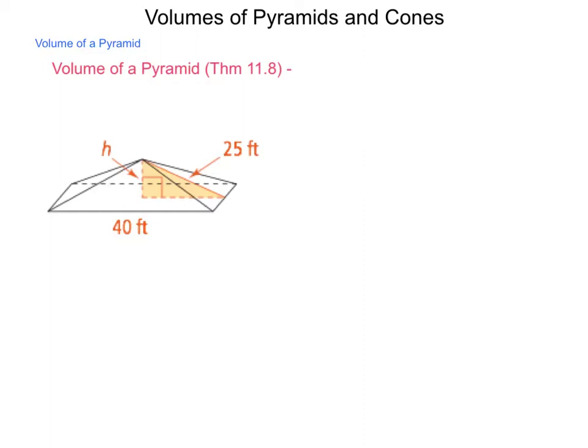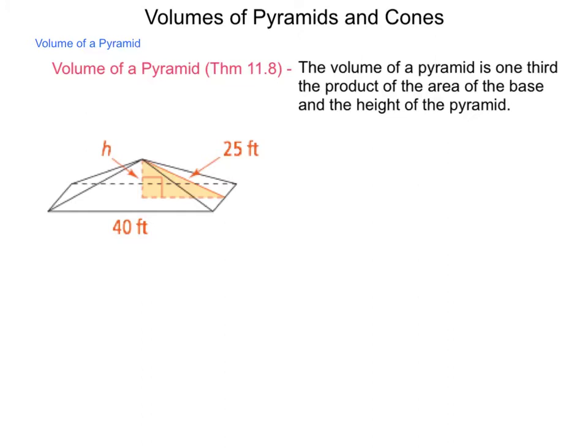And we're going to begin this with theorem 11.8, which is the volume of pyramid. And this theorem states, the volume of a pyramid is one-third the product of the area of the base and the height of the pyramid.